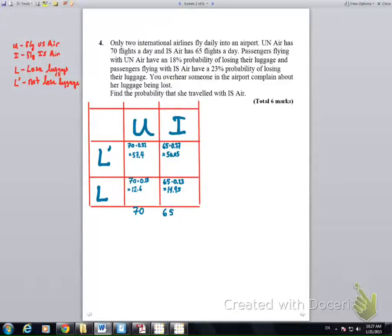Using the same calculations with a 23% lost luggage rate, we can calculate 50, approximately, of the 65 customers on IS Air will keep their luggage, and about 15 will lose their luggage. If we add them up, we get the 70 and 65 passengers. But we can also add horizontally, and that shows the horizontal addition shows us that we can take the 57.4 who kept their luggage in one airline, and the 50 who kept their luggage on the other, making a total of 107.45 keeping their luggage, and 27.55 losing their luggage for a grand total of 135 passengers.